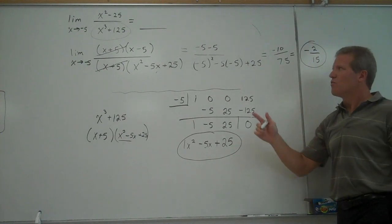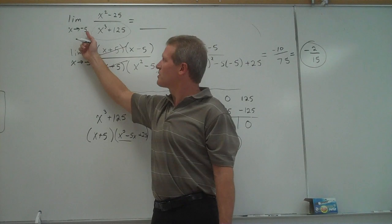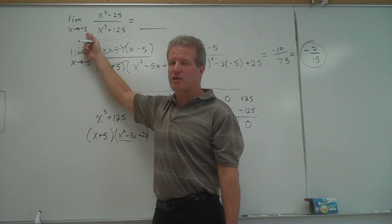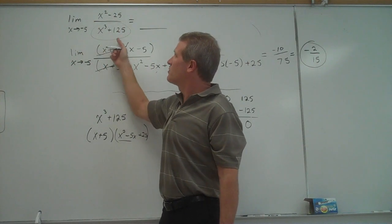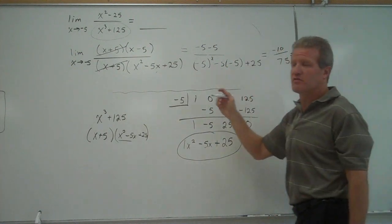And so what that tells me is that as x gets closer and closer to negative 5 from both the left and right side, the value of this expression is getting closer and closer to negative 2 over 15.